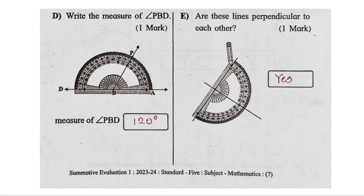The question is: are these lines perpendicular to each other? If you have two lines, you have to check the angle. The angle measures 90 degrees. Yes, these two lines are perpendicular.